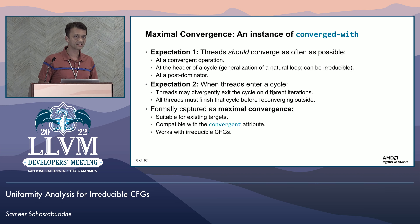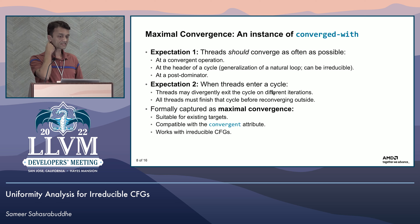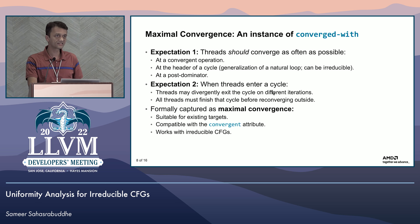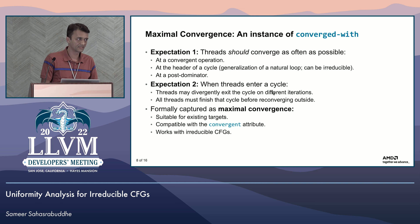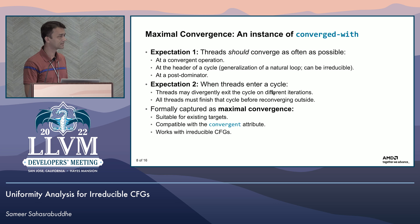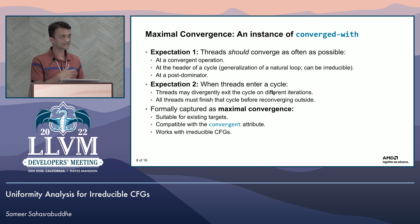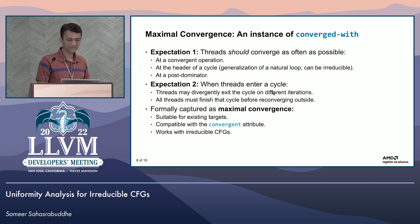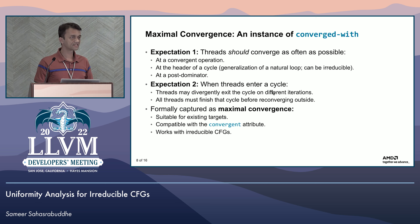Maximal convergence: there is no one converged-with relationship we can define fundamentally in a program — it depends on the execution we're interested in. A typical expectation is that threads should converge as often as possible: they should converge at a convergent operation, at the header of a cycle (where a cycle is a generalization of the natural loop that is allowed to be irreducible), and at a post dominator. Another expectation is that when converged threads enter a cycle, some may divergently exit in different iterations, but all threads that enter the cycle must finish it before reconverging outside. This is formally captured as the maximal convergence relation, which is suitable for existing targets, compatible with the convergent attribute in LLVM IR, and works with irreducible CFGs.